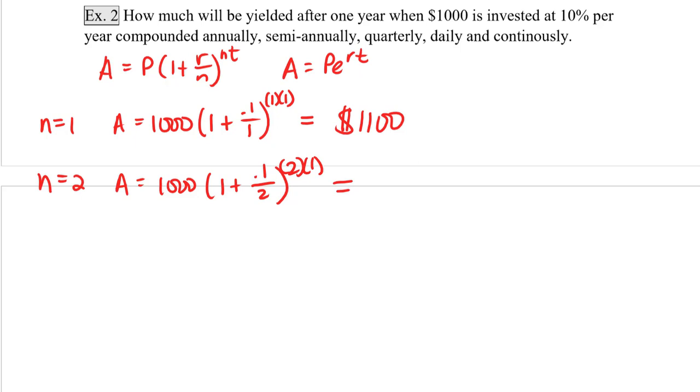Our third scenario is compounding quarterly, where n is equal to 4. So A equals 1,000(1 plus 0.1 divided by 4) raised to the 4 times 1. And this is equal to $1,103.81.